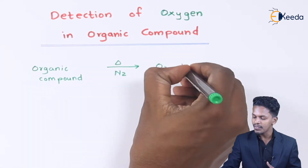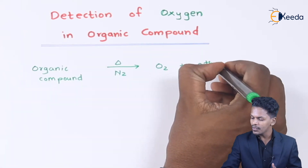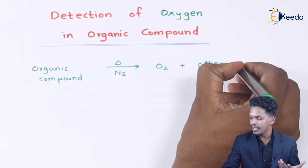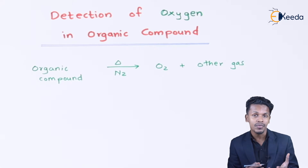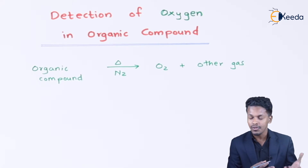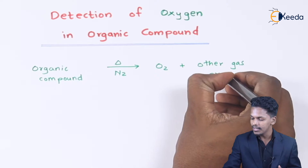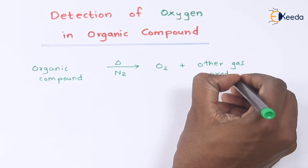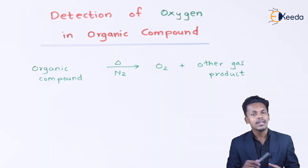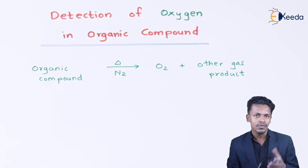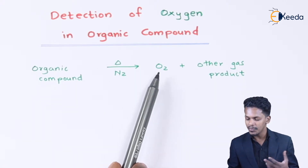Not only oxygen gas, but it will produce other gases also. The other products could be other gases depending on the organic compound, which may consist of different kinds of elements. I have written here that is 'other gaseous products.' But since we are concerned with the percentage of oxygen, this is the oxygen that has been produced.